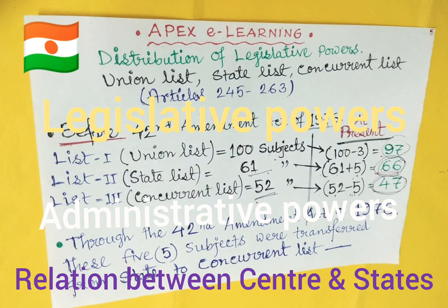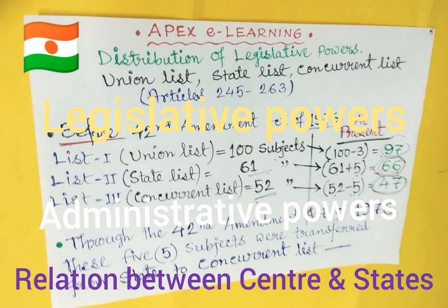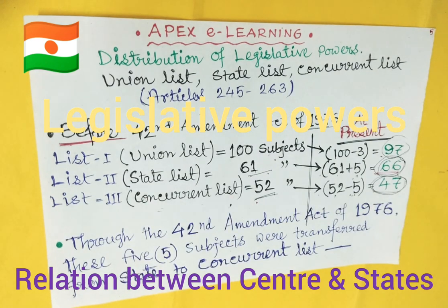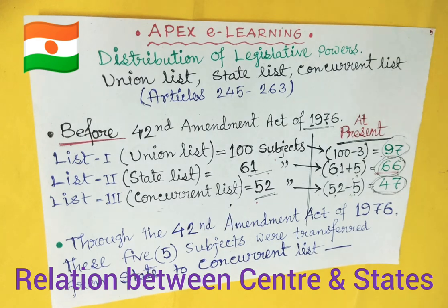In part one of this video, we discussed the union list in detail. Today we are going to discuss the other two lists: list two, the state list, and list three, the concurrent list, in detail. Hope today's discussion will help you a lot in your upcoming examination. So let's have a look.